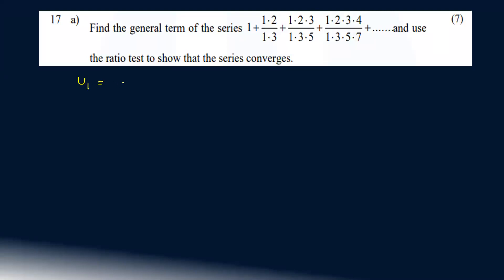u1 is the first term, that is the value 1. u2, the second term, is 1·2. If you have 2, it is 1·2 divided by 1·3. This is the value in terms of u2.